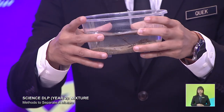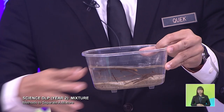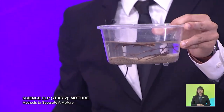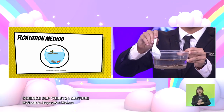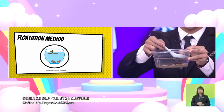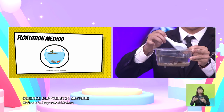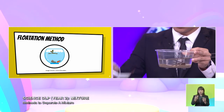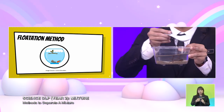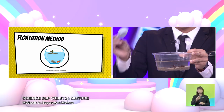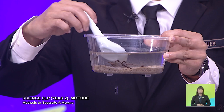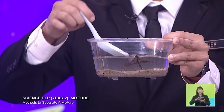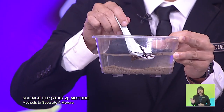From here we can see that the wood debris actually floats. So this is a simple way of how to remove wood debris. We can remove the wood debris from the sand. That's one way of separating. Then you can get a clean aquarium for your fish to swim inside. That's flotation.